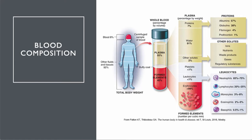We know that the blood is composed of plasma, and plasma takes up most of that space. 91% of it is water. 7% are proteins, and the most prevalent protein is albumin. The other globulins and fibrinogen and the clotting factors are present in the proteins as well, but the vast majority is albumin.